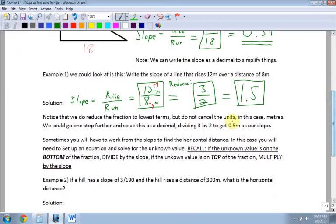Notice that we do reduce fractions to lowest terms, but do not cancel the units. In this case, meters. So this is always meters. So it's 3 over 2 meters, or 1.5 meters. We could go one step further and solve this, which we did. And we got dividing 3 by 2, we should get 1.5 as our slope.